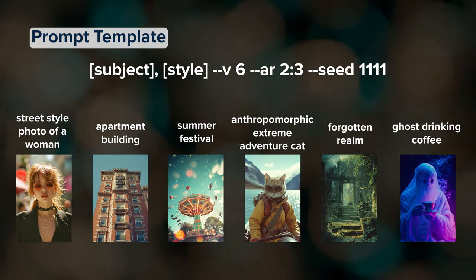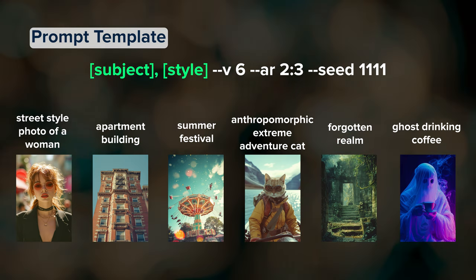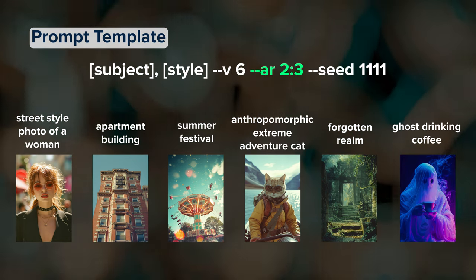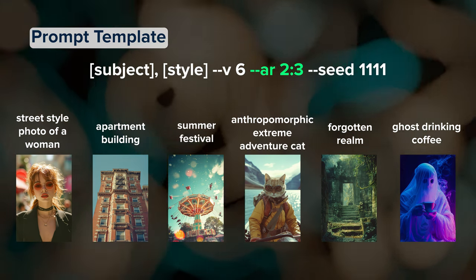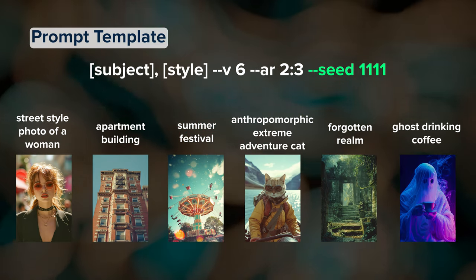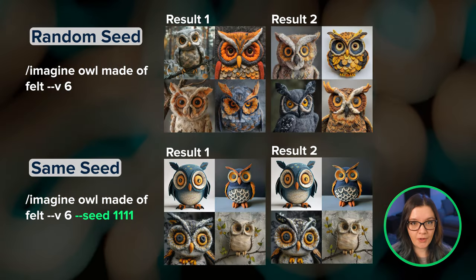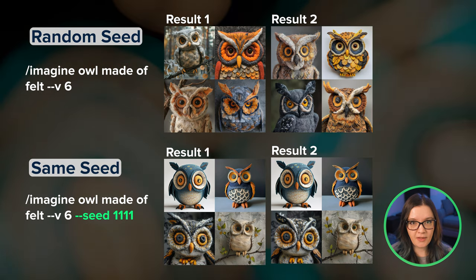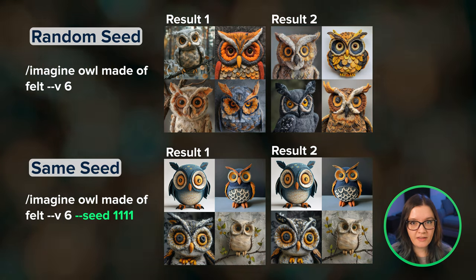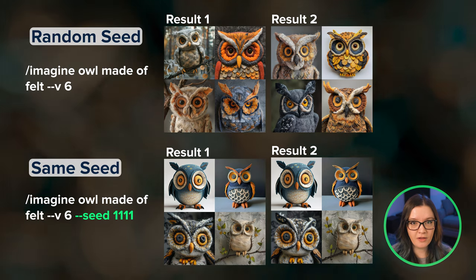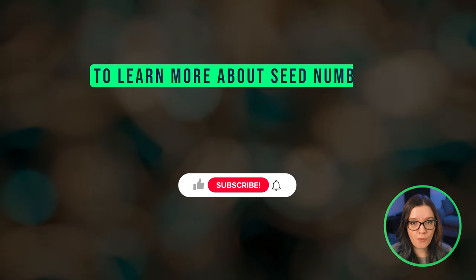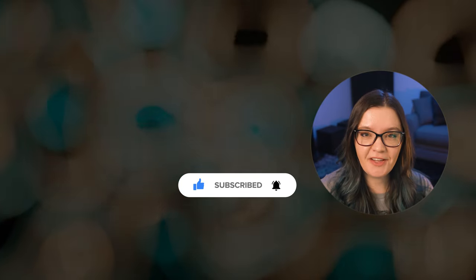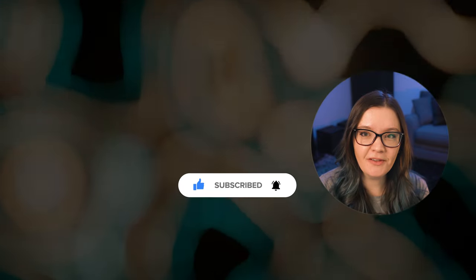For simplicity, each prompt will follow the formula: subject, style. Then we have our parameters — V6 for Midjourney Model version 6, an aspect ratio of 2 to 3, and I'll use the same seed number of 1111 in every prompt. You don't have to include a seed number, but I'm doing it for this video because it establishes a degree of reproducibility and allows us to more easily compare the impact of different prompts on the same subjects. If you want to know more about using seed numbers in prompts, I wrote an article that I'll include in the description below.